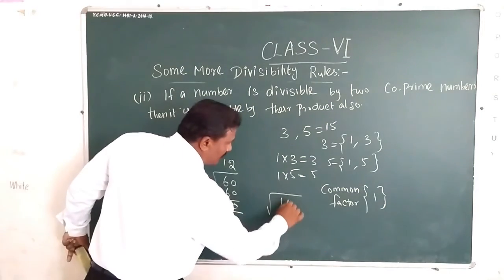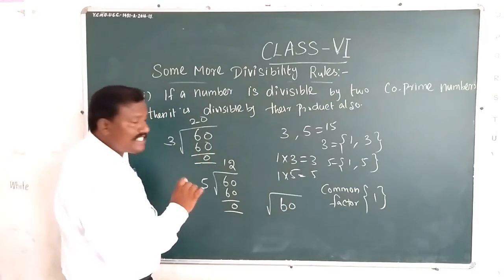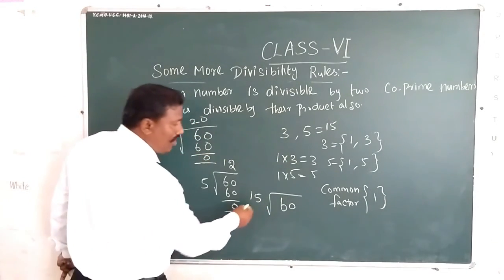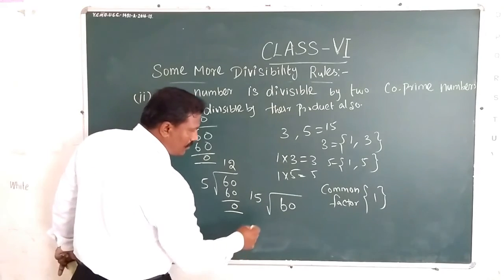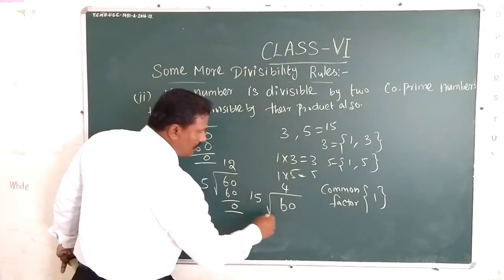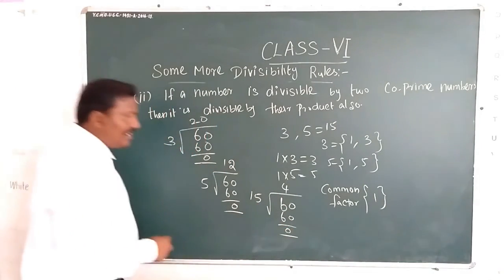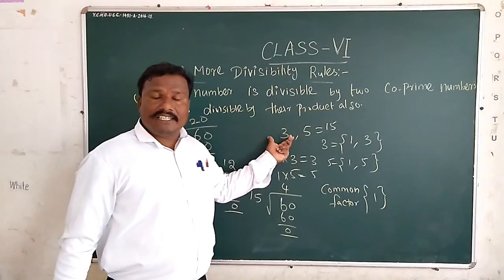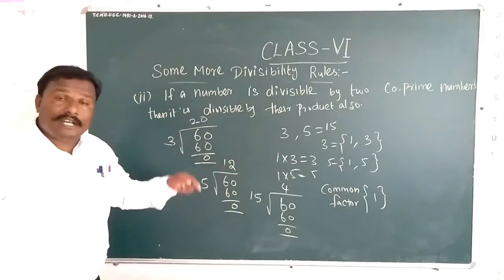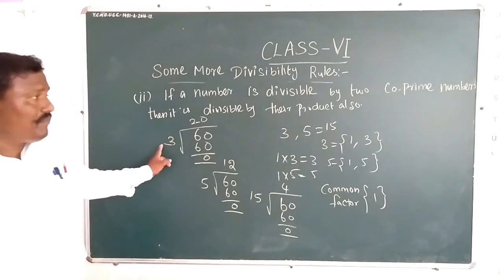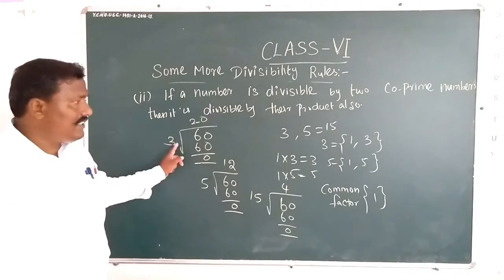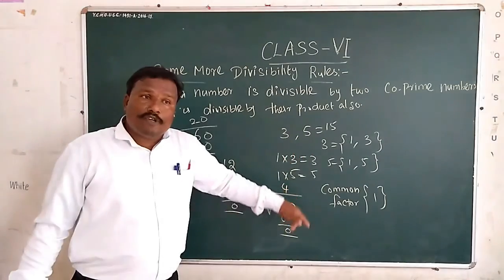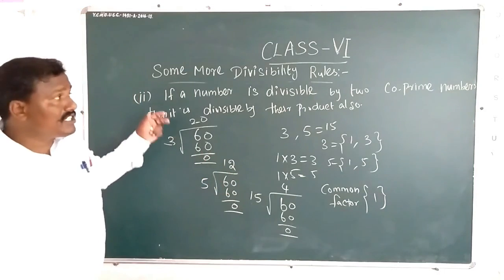The product of 3 and 5 is 15. Let's verify: if you divide 60 by 15, four 15s are 60. So 60 is divisible by 15 as well. This confirms Rule 2: if a number is divisible by two co-prime numbers, then it is also divisible by their product. That is Rule 2.